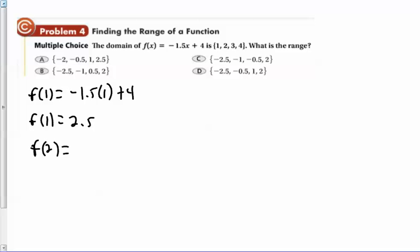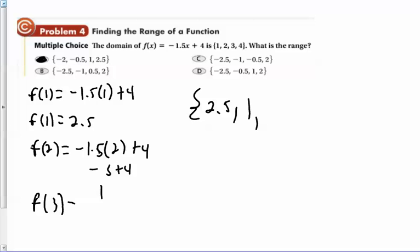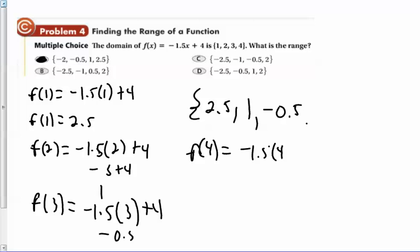Find f of 2. I'm going to plug that in, negative 1.5 times 2 plus 4. That is negative 3 plus 4, so that gives me a 1. And then, which one has 2.5 in it? Well, that's easy. 2.5 and 1 is here, that's A. But you can continue to go ahead and do f of 3, negative 1.5 times 3 plus 4. I think negative 1.5 times 3 plus 4 gives me negative 0.5. And then finding f of 4 is negative 1.5 times 4 plus 4. And I believe that's going to get me a negative 2. Easy enough.